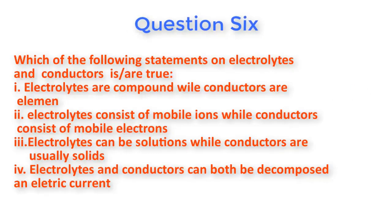Question number six: Which of the following statements on electrolytes and conductors is or are true? One: Electrolytes are compounds while conductors are elements. Two: Electrolytes contain mobile ions while conductors consist of mobile electrons. Three: Electrolytes can be solutions while conductors are usually solid. Four: Electrolytes and conductors can both be decomposed by an electric current.